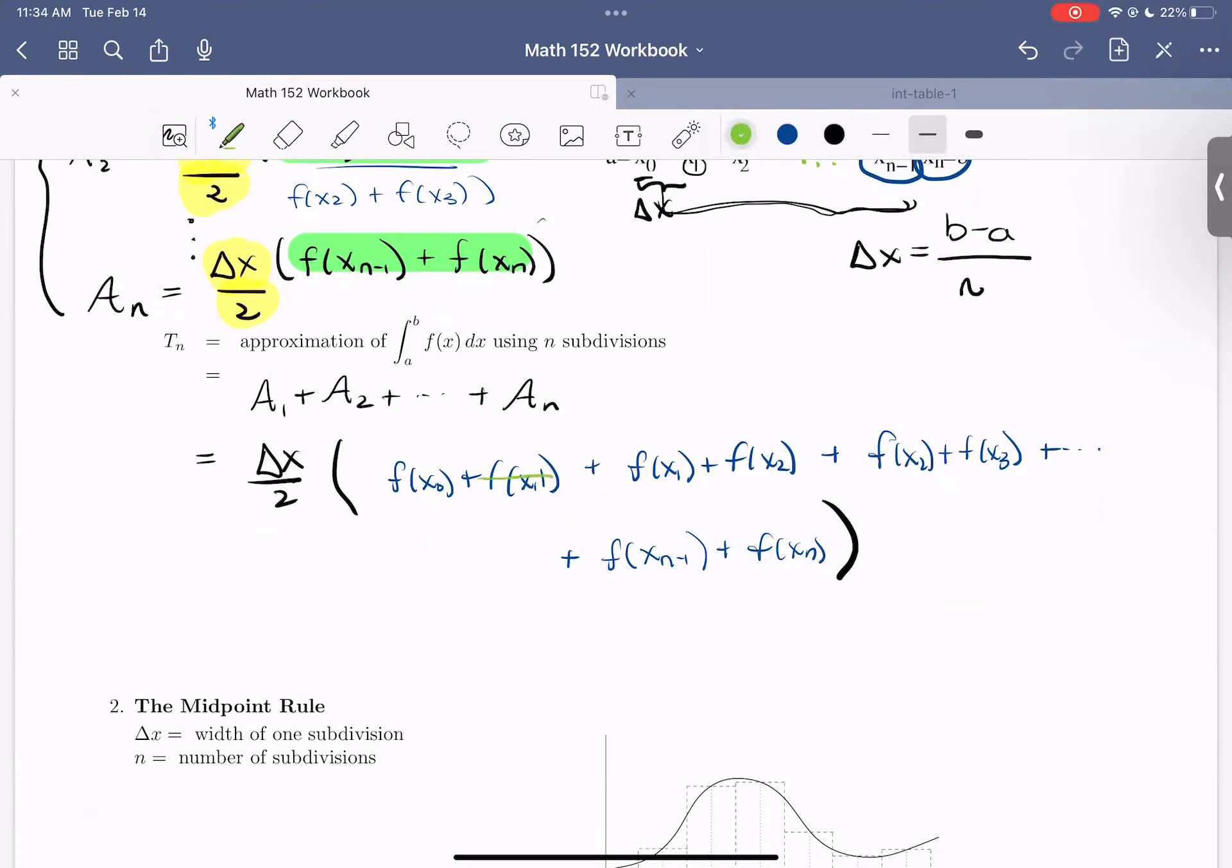So we see that we have an F of X sub one and an F of X sub one. We have an F of X sub two, F of X sub two, F of X sub three. We'd have another F of X sub three here. So we have some repeated terms, which we could combine.